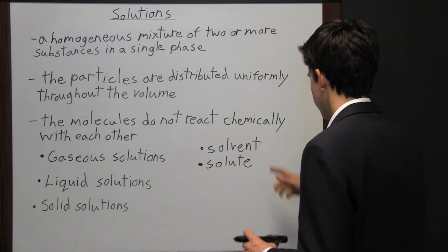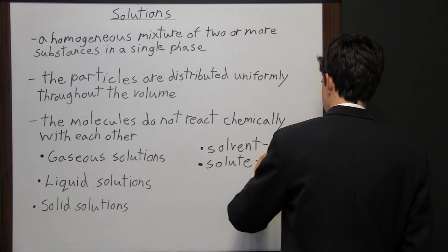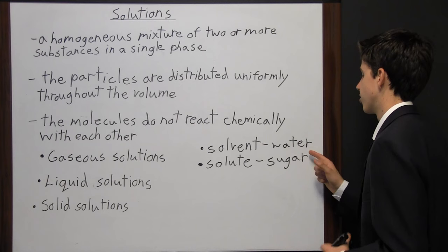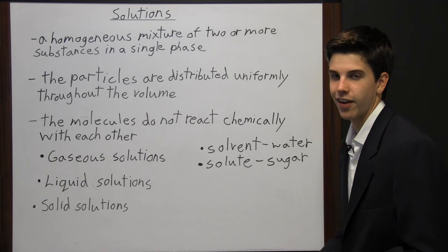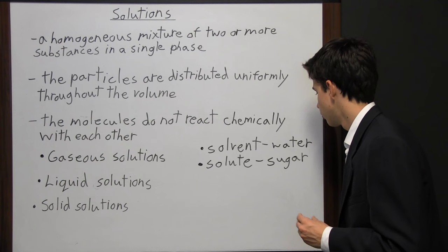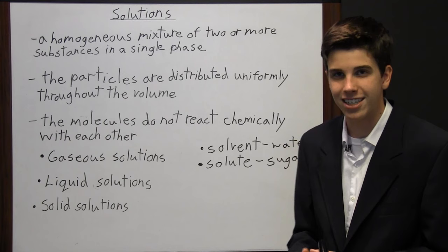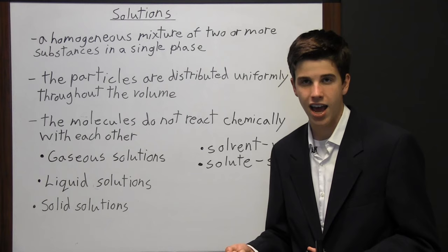The solvent dissolves the solute. For example, with water and sugar: water is the solvent and sugar is the solute. When sugar is put into water, it eventually dissolves completely and is distributed uniformly throughout the volume — so every teaspoon of the solution contains the same amount of sugar.